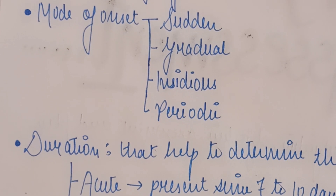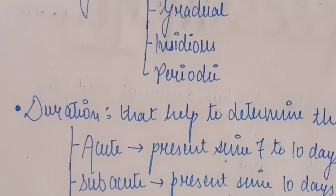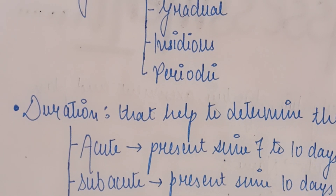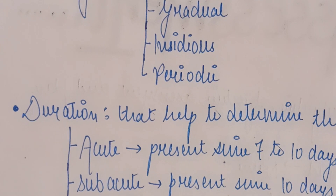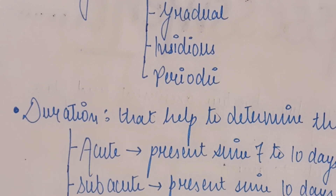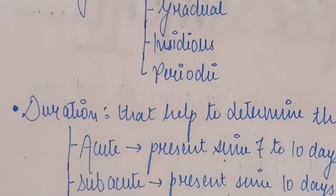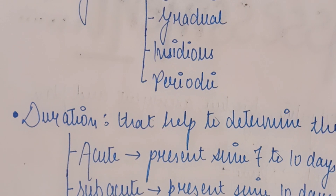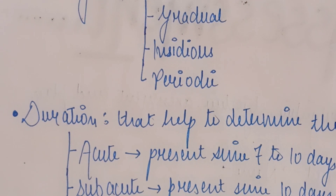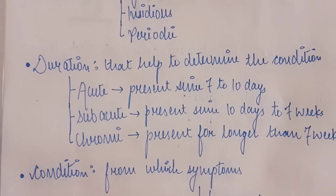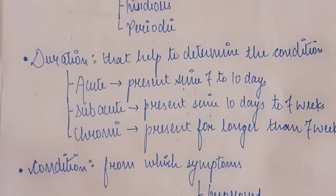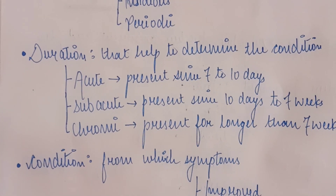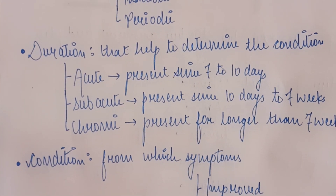Now we will talk about duration. What is duration? How long has the condition or the symptoms persisted — for a long period of time or a short period of time? Also, on the basis of duration, we classify the condition as acute, chronic, or sub-acute.